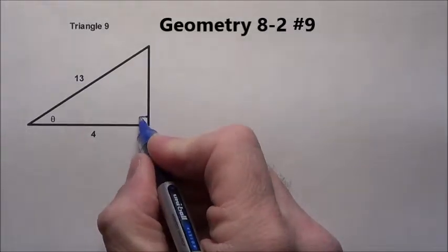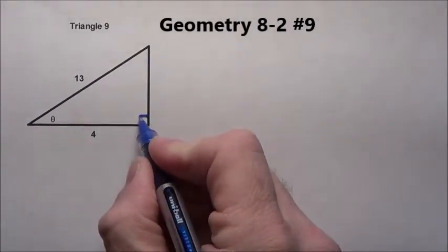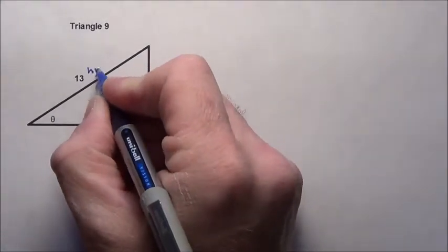Here we have triangle 9, a right triangle. Here's a right angle in that triangle. Across from the right angle is always going to be your hypotenuse.